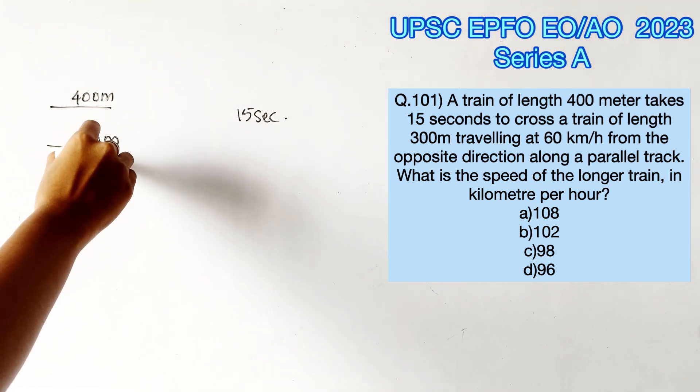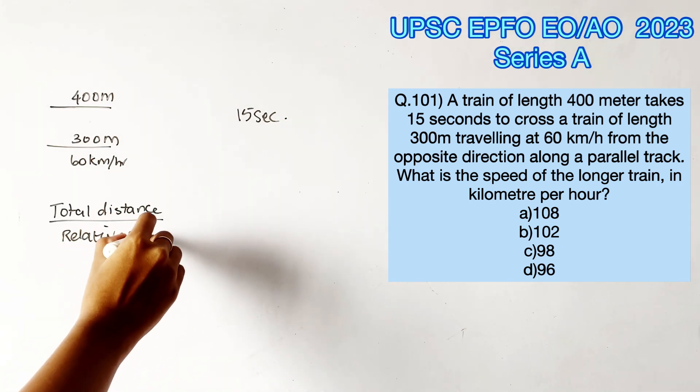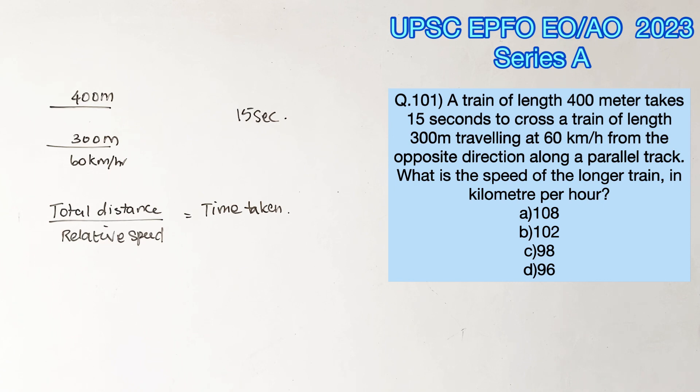We know that when dealing with two moving bodies, the total distance divided by the relative speed equals the total time taken. Since these trains are moving in opposite directions, the relative speed would be the sum of both speeds.